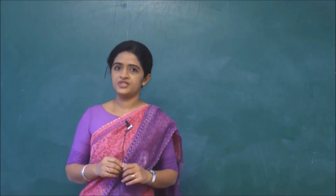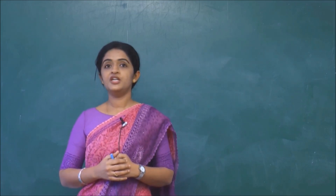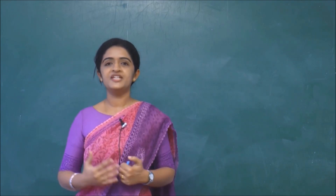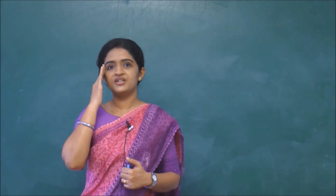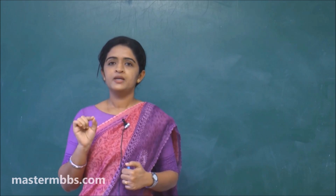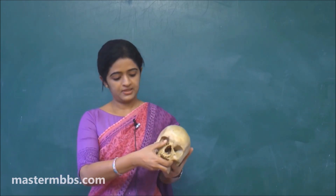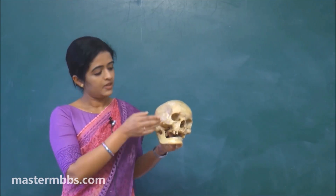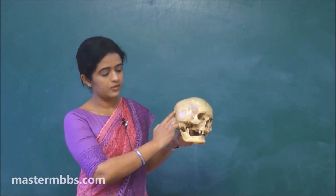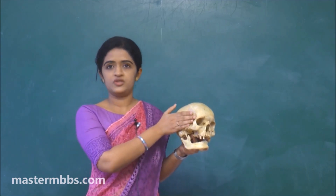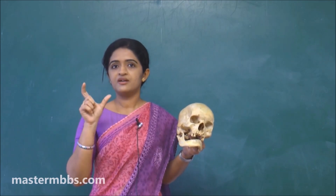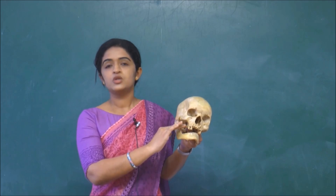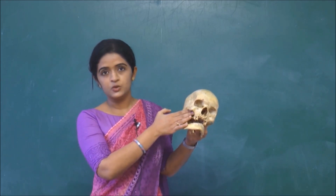Today we will be talking about the infratemporal fossa. Before coming to the infratemporal fossa proper, we need to know where it is. You might know about the temple - in our body it is here, where we palpate when we get a headache and feel pulsations of the temporal artery. The temporal fossa is on the lateral aspect of the skull, above the zygomatic arch and below the superior temporal line. 'Infra' means just below, so the infratemporal fossa is the region just below the temporal fossa.